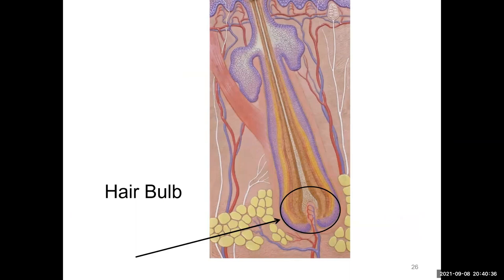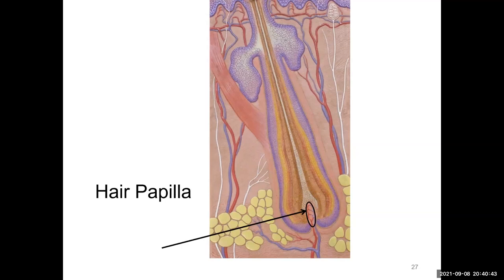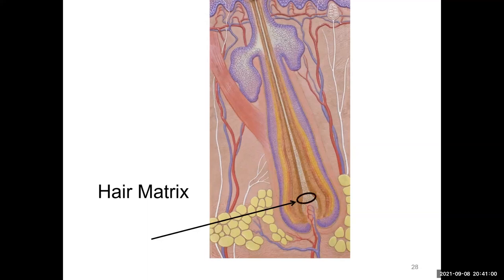At the bottom of the hair root, where it starts to expand out, we call that the hair bulb. That's the beginning of our hair. Everything in that expanded region is the hair bulb. You can see small blood vessels going into the center bottom of the hair bulb — that's called the hair papillae. The region right above the hair papillae is called the hair matrix — the actively growing portion of your hair, where cells are dividing and getting pushed toward the surface, which is why your hair grows outward.